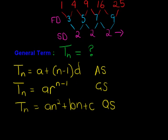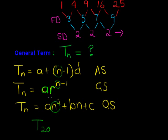Do you notice that each one of them has an n? N represents the term number. So if I wanted term 20, I would substitute n with 20. These are called parameters — once we have the parameters we can find any term, like term 20. That's a basic introduction; I hope you've got the gist. We'll see you in the next video.